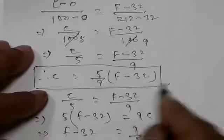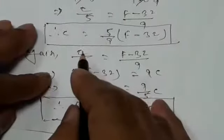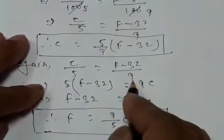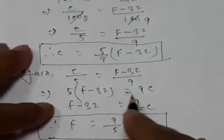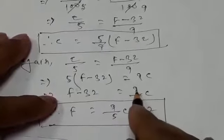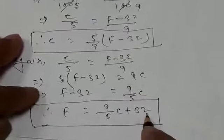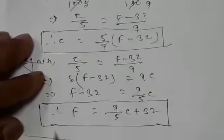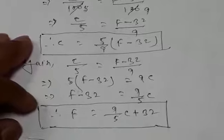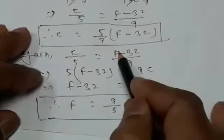This is the required formula to find the centigrade scale from Fahrenheit. By cross multiplication: C/5 = (F − 32)/9, so 9C = 5(F − 32), giving F − 32 = 9/5 × C, and therefore F = 9/5 × C + 32. We use these formulas to convert between Celsius and Fahrenheit.